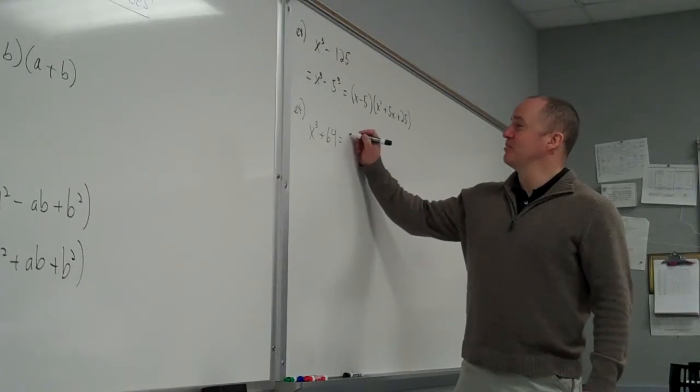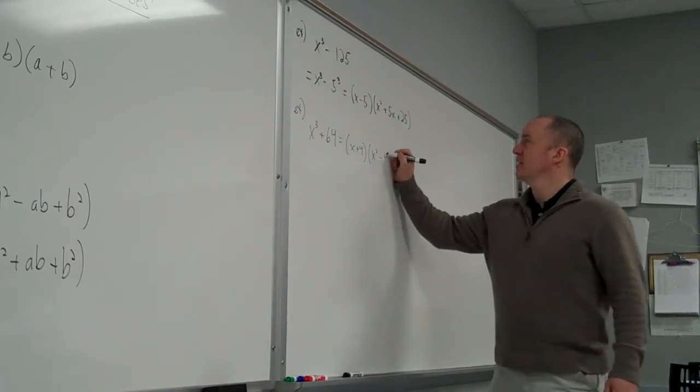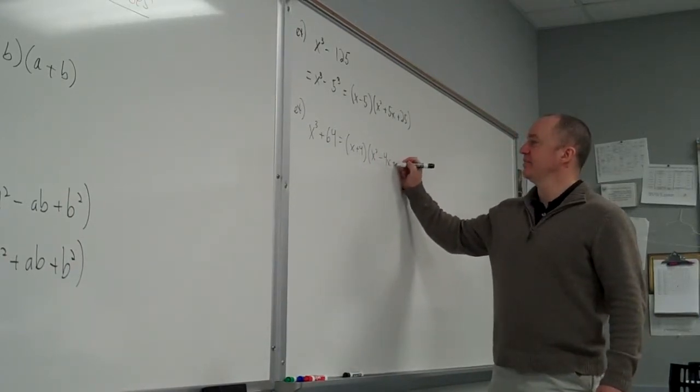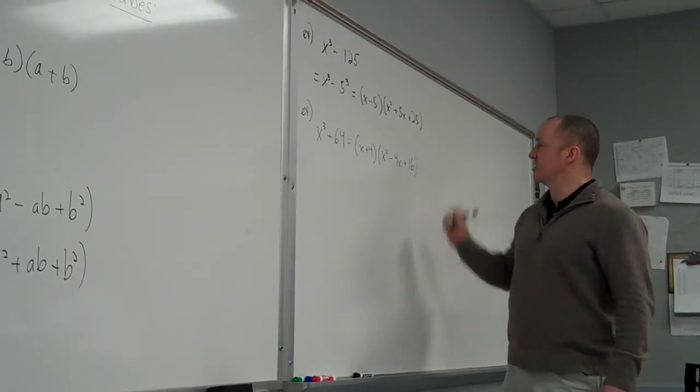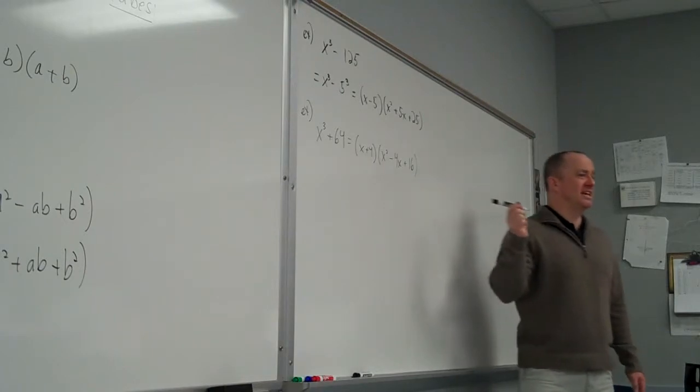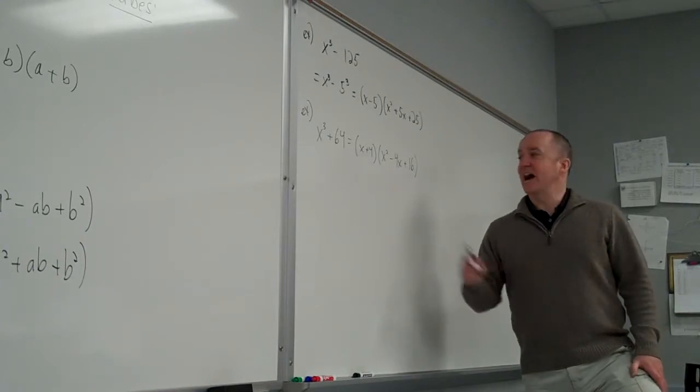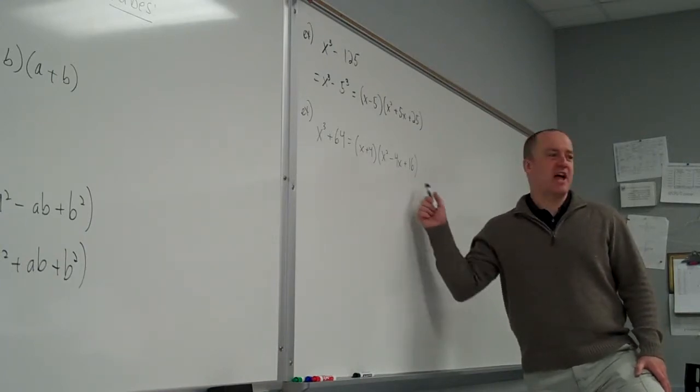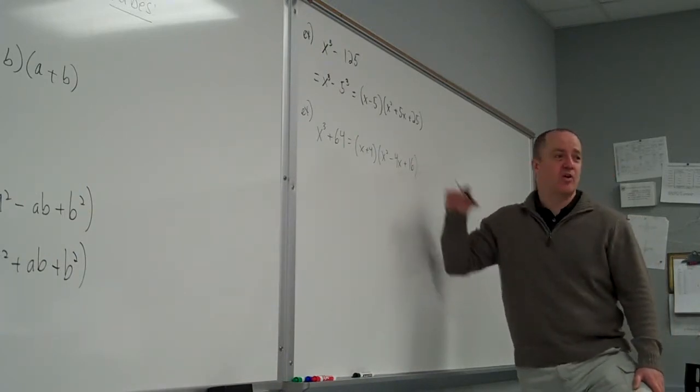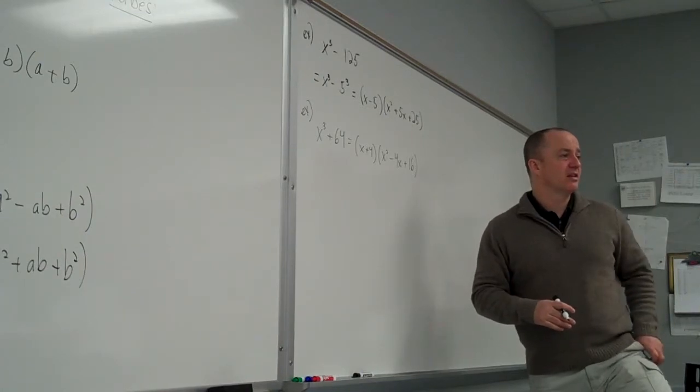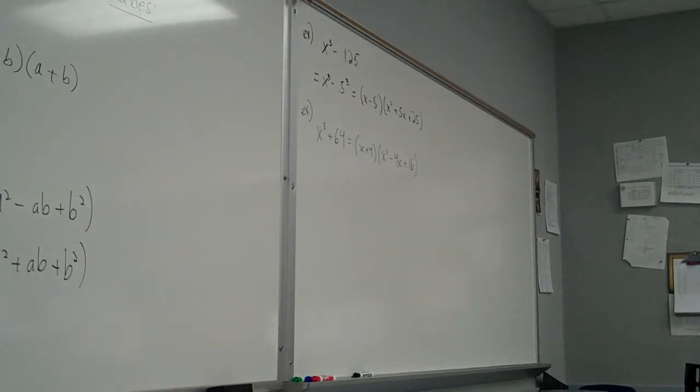So this breaks down to x plus four times x squared minus 4x plus 16. The a times b gives me my middle term. The four squared gives me the 16. This always looks to me like it should be factorable, but it's not. Yeah, I can't break this down any further. That's one of the things about these sum and difference of cubes. They always leave you a leftover quadratic that only has imaginary solutions. Yes? Can you try the heat? Yeah, I was just noticing that, too. I did when I got in, but not enough, apparently.